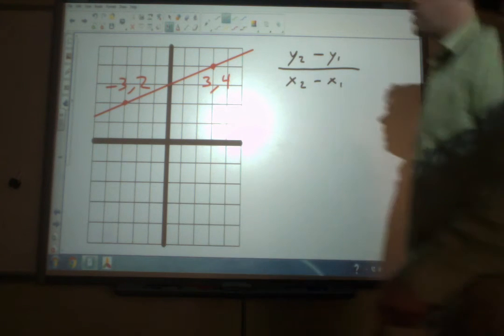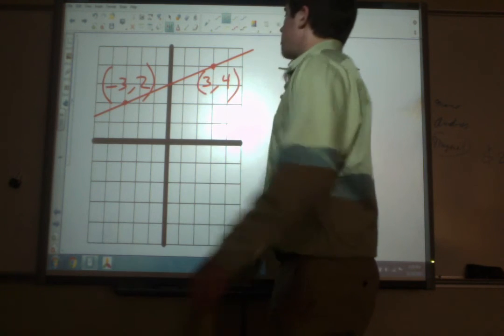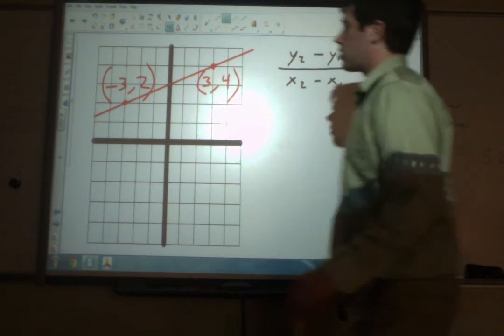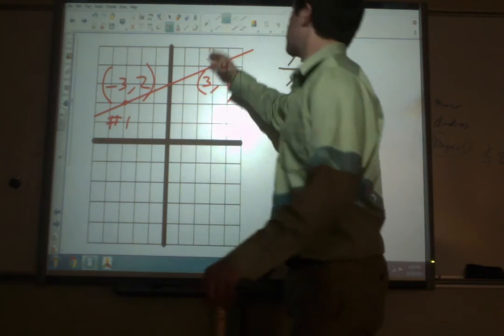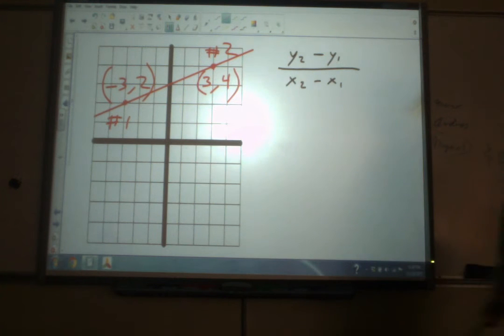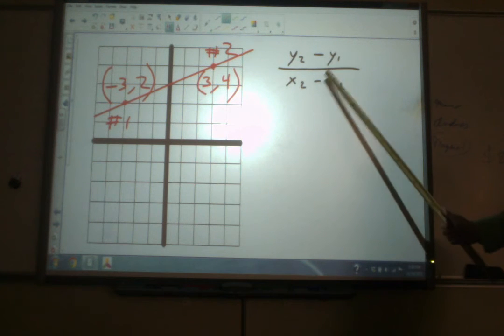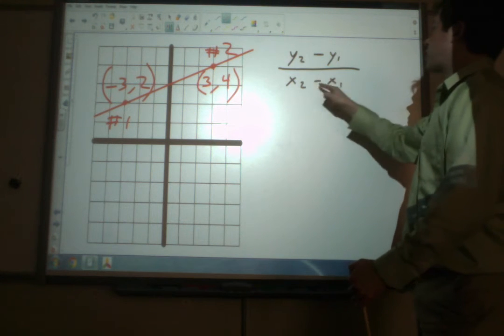Now, we're just going to pick one of these and call it point number 1, and we're going to call the other one point number 2. So let's call this one point number 1. Here's point number 2. Now we've got all the information we need to go ahead and put these numbers into our slope formula.